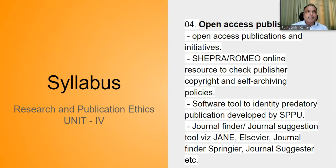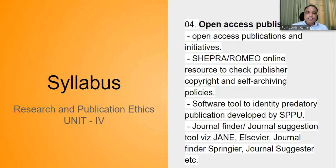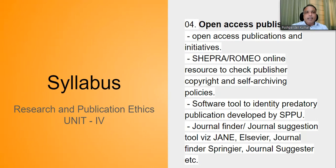We'll also discuss copyright issues — for example, can you self-archive your work? If you send a paper for publication, you may want a soft copy to be kept in your own institution's library so that everybody can access it. We'll talk about the different policies on this — what the government says, what UGC says, and how to take permission from journals or publishers to keep a copy in your institution. We'll also discuss software tools that help you identify valid open access journals where you can send your paper without being charged.